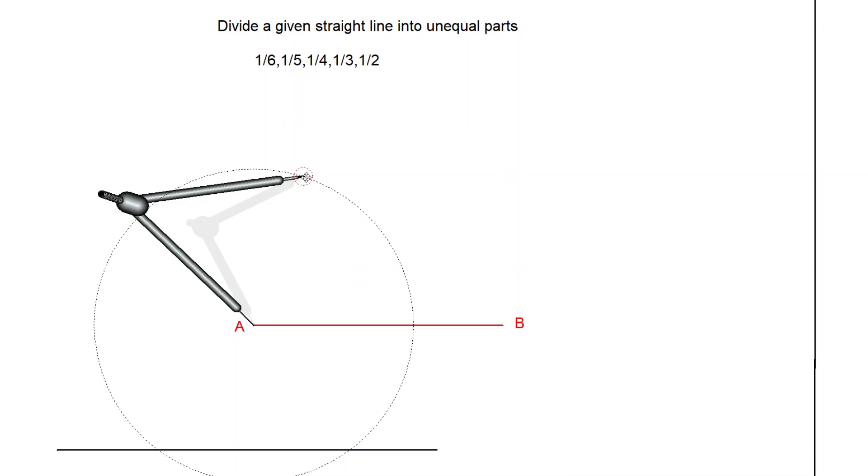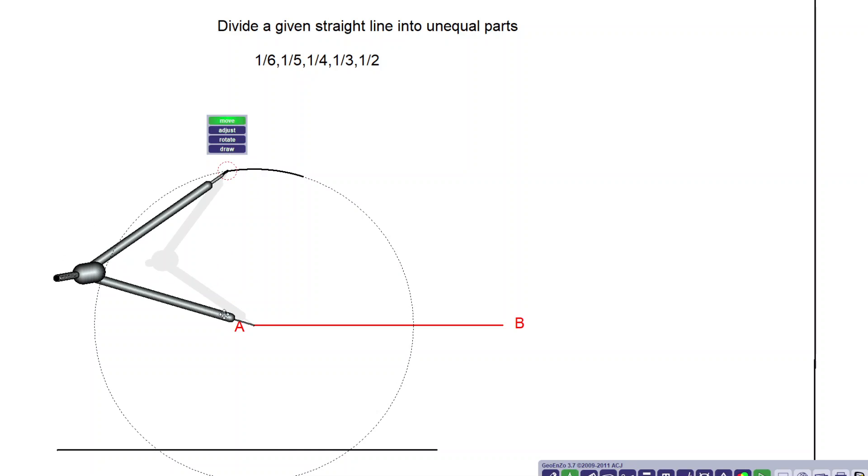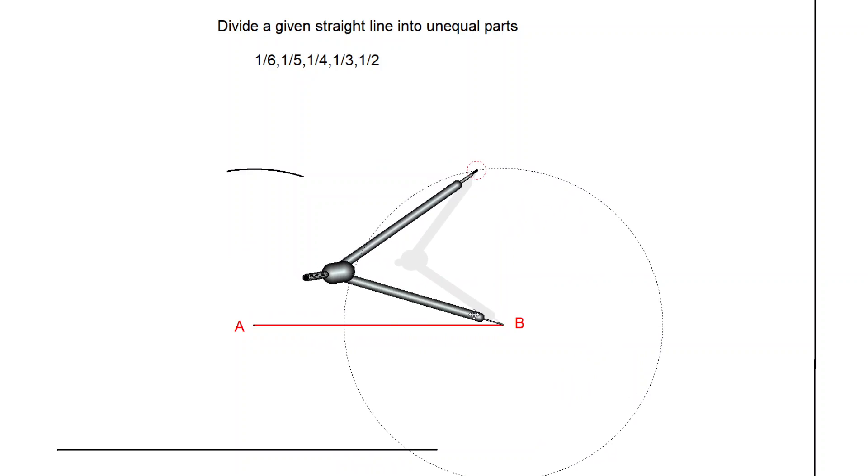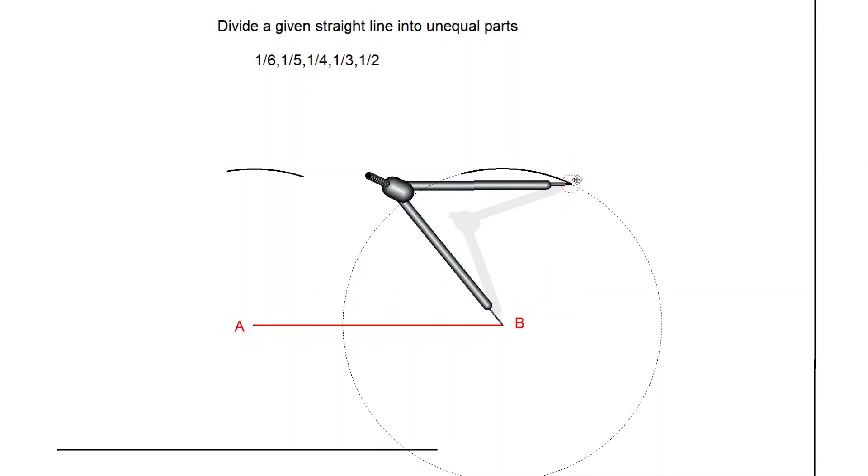Now you draw the curve on B. Similarly, bring the compass at point B and draw the curve. Drawing this curve is giving you a fixed length of the line.